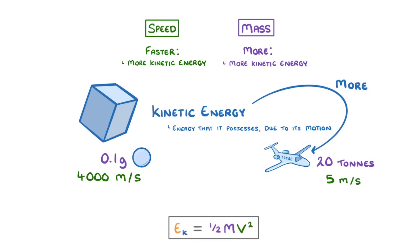which states that Ek equals 1 half mv squared. If you're not familiar with this equation, the e stands for energy, and the little k means it's kinetic energy.